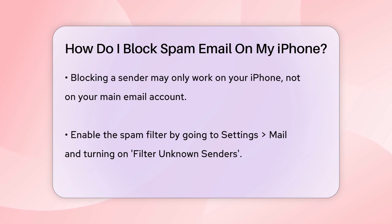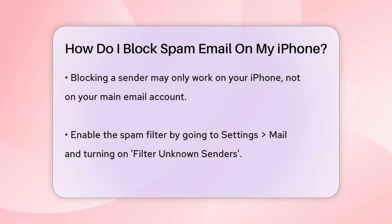Enabling the spam filter is also a good idea. Go to your iPhone settings, scroll down to Mail, and make sure the Filter Unknown Senders option is turned on. This will help filter out emails from unknown senders and reduce the amount of spam you receive.